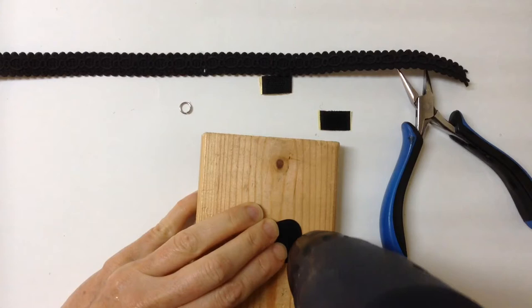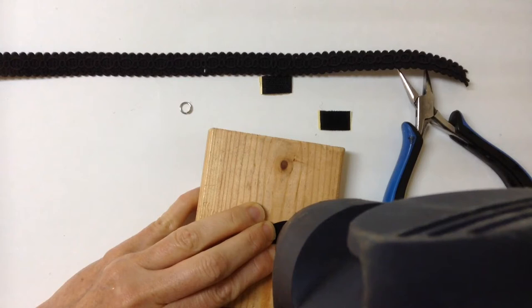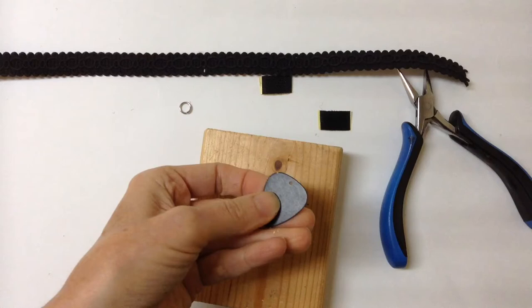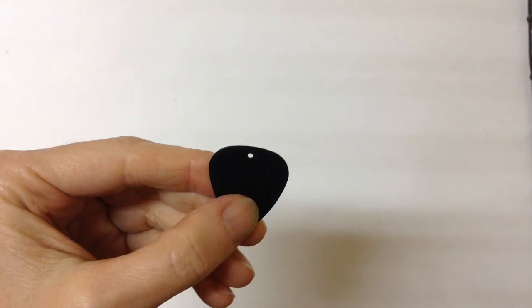If you're not good at eyeballing the center you can measure it if you like, and then hold the drill straight up and just quickly push it through until you see the wood come through. And there you have your hole in the pick.